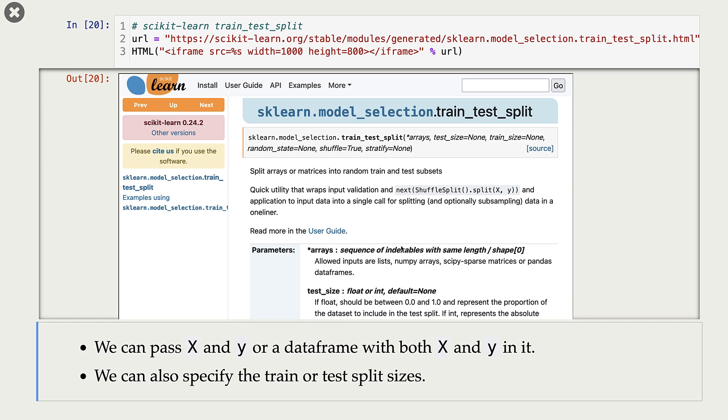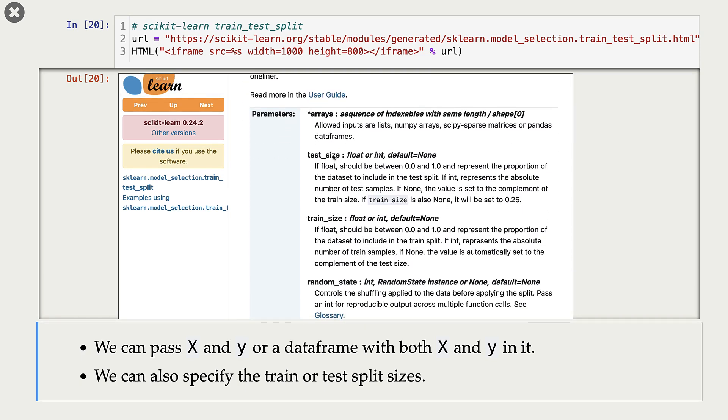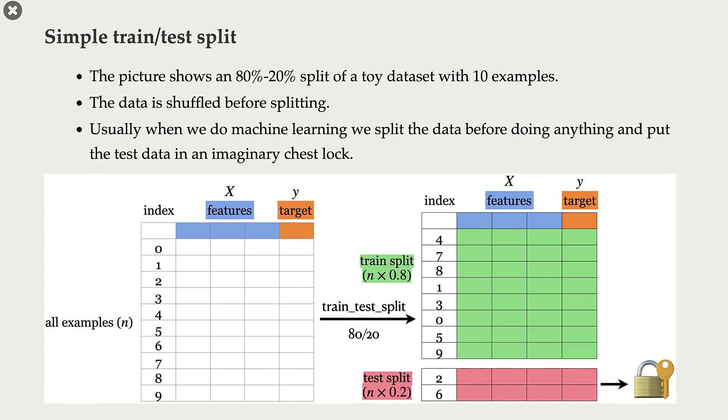We can also specify the train or test split sizes. For example, if I specify my test size as 0.2, it will split the data into two parts, 80% in the training and 20% in the test split. Let's look at a toy example. Here I have 10 different examples. These blue things are my features and this orange column is my target. These are the indices of my examples. When I call train_test_split on this data using test size of 0.2, then I will have 80% of the data in my train split and 20% of the data in my test split.